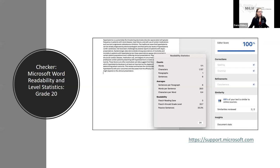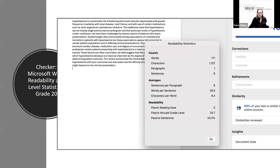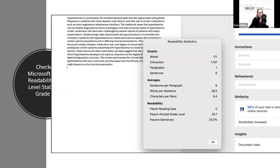You're all probably creating scripts or writing content in Microsoft Word, and they already have a tool to assess readability in your documents. After you run a spelling and grammar check, you can read the readability score based on the Flesch-Kincaid Grade Level and the Flesch Reading Ease test. I put in the abstract from our hyperkalemia article and it gave us a readability score of grade 20 plus. This resource doesn't tell us what to change or rewrite it for us — it just gives us a general baseline that this is written for somebody with a reading level of grade 20.